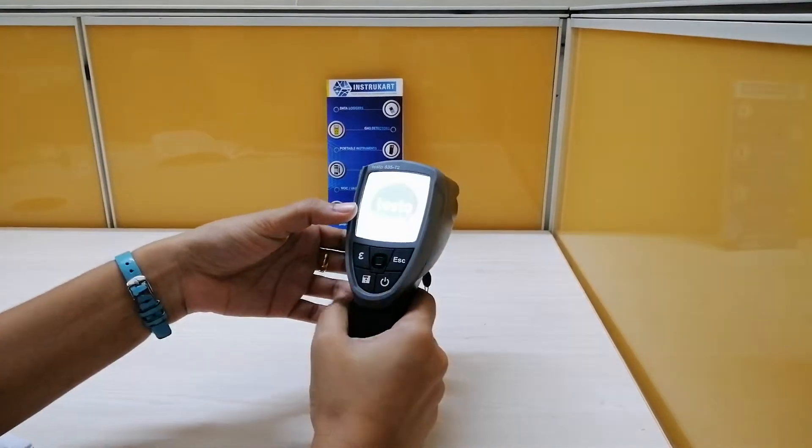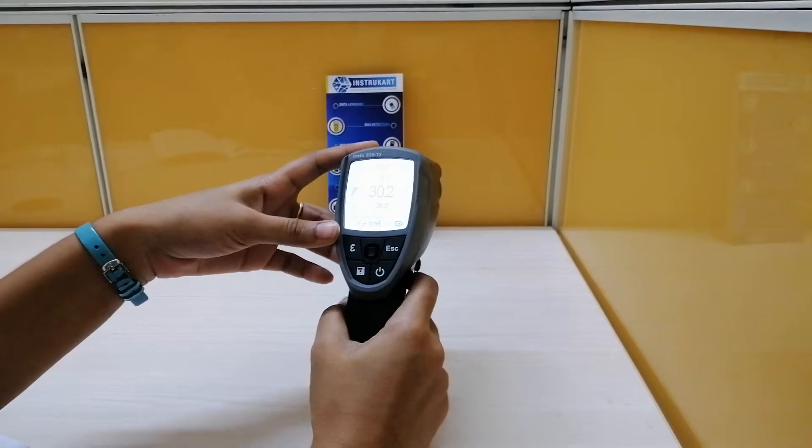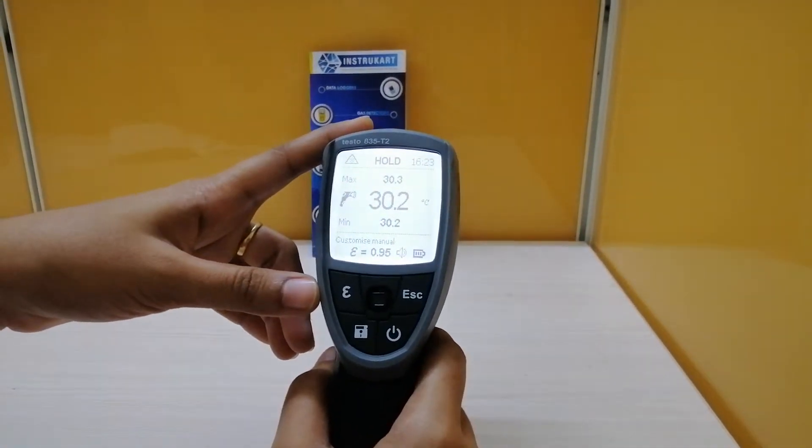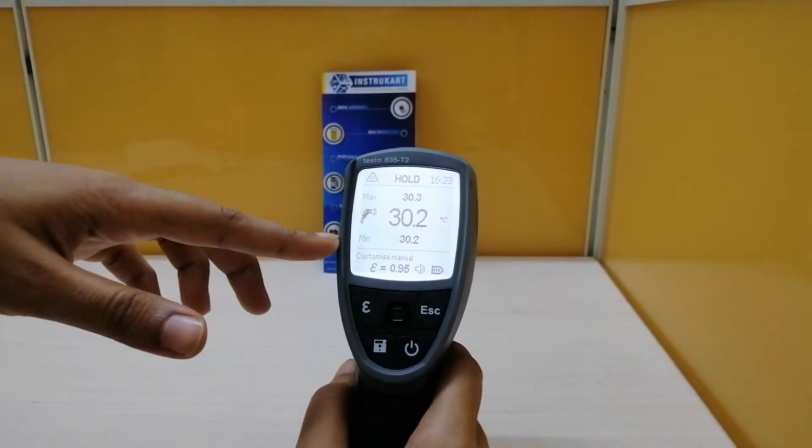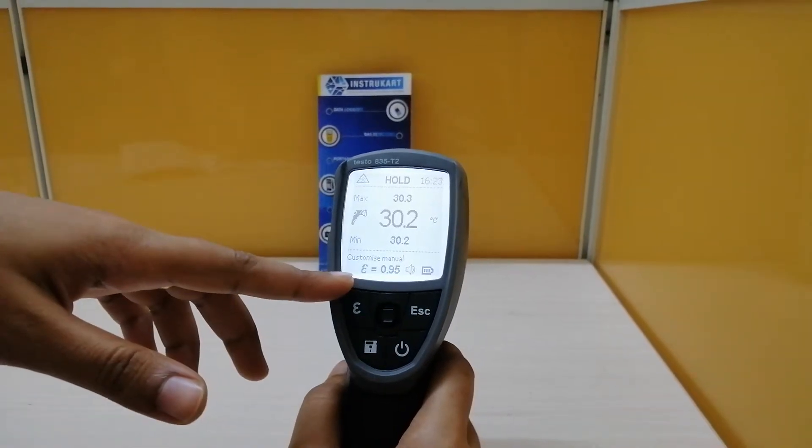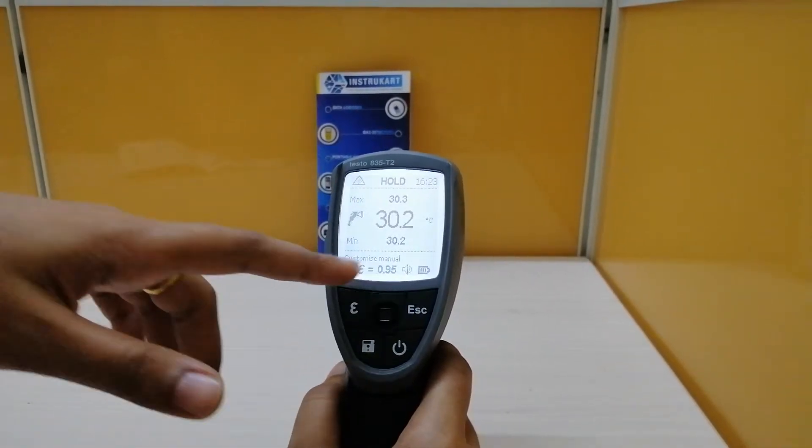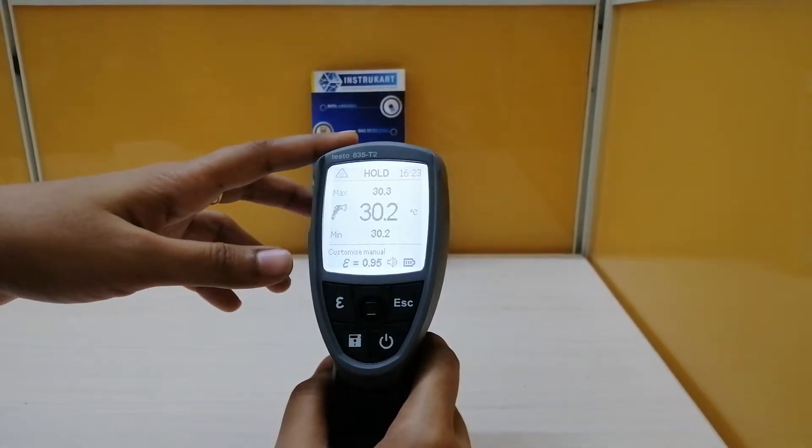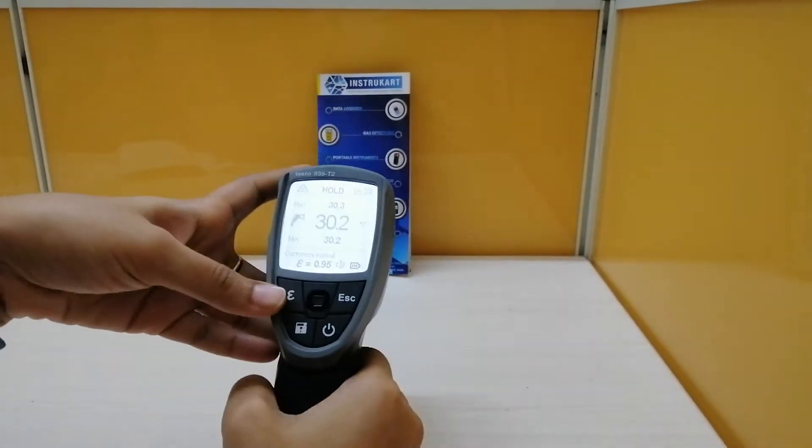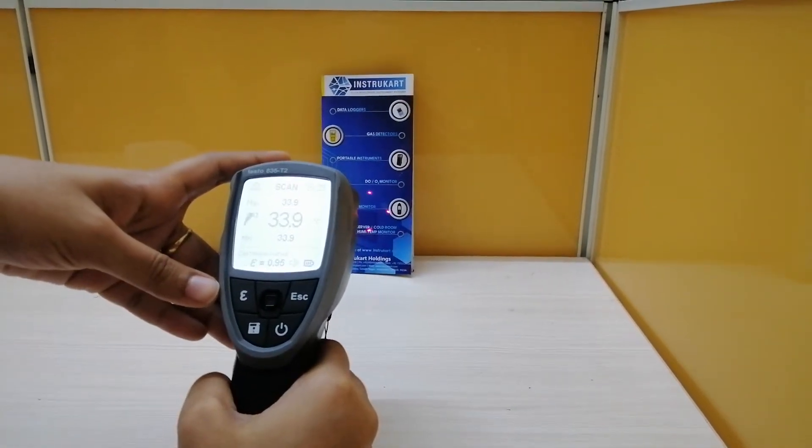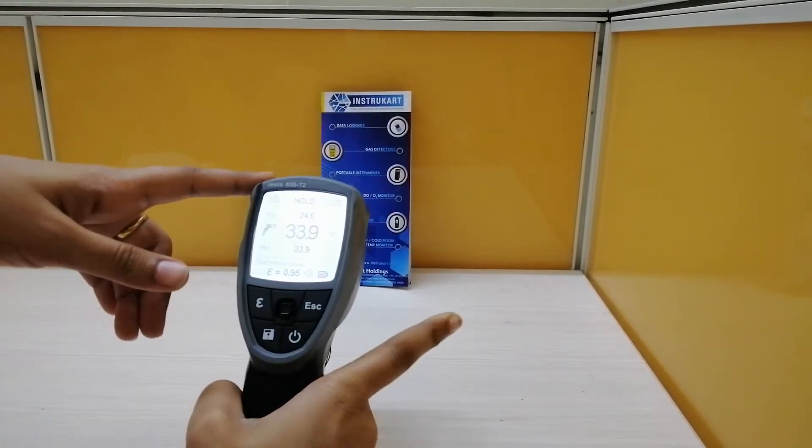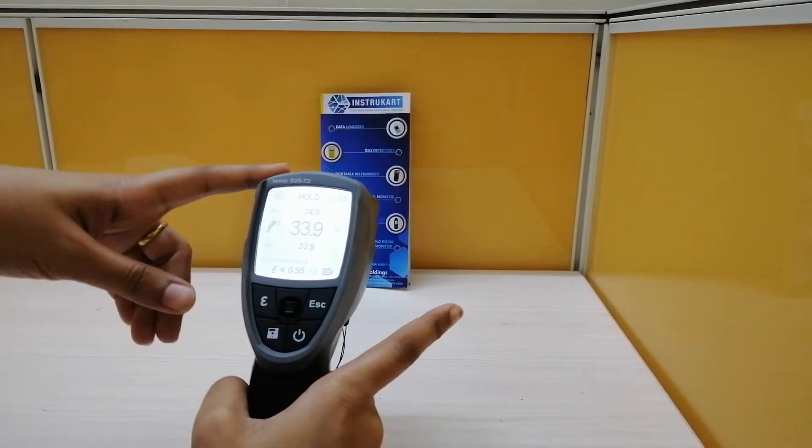Let me turn on the device. Here you can see max, min, recorded, emissivity. You can customize it. Battery, sound, and time. When the trigger is on, it will show scan. When we release, it will be on hold.